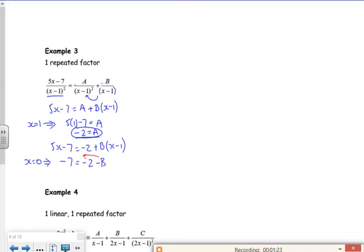If I take the B over and take the 7 over, I've got B is minus 2 plus 7. I've got B is 5 there.